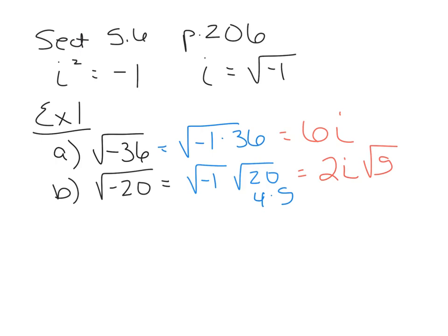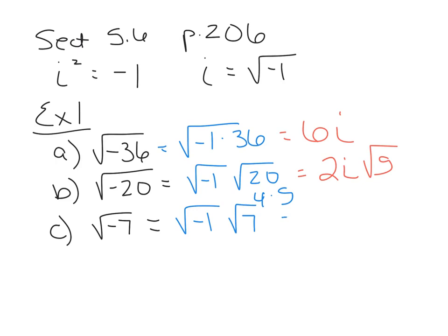Letter C: the square root of negative 7. We're going to separate this into the square root of negative 1 — this is what we always do when we have a negative radicand. We take that negative 1 out as the first step, then simplify whatever's left. The square root of negative 1 gives us an i. The square root of 7 does not simplify, so we have i on the outside times the square root of 7.